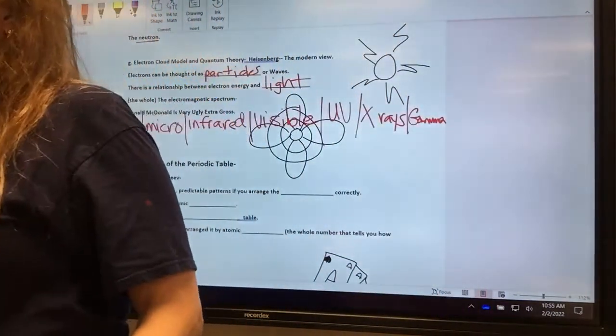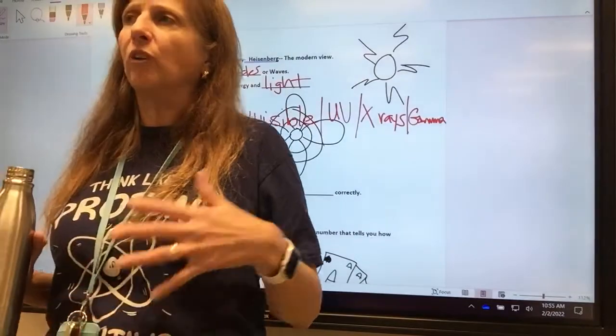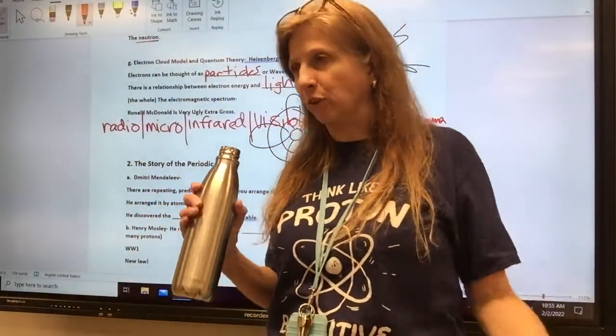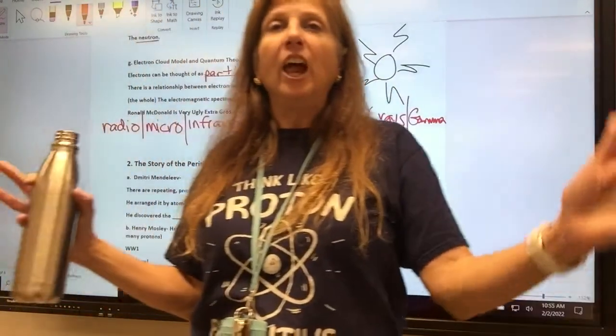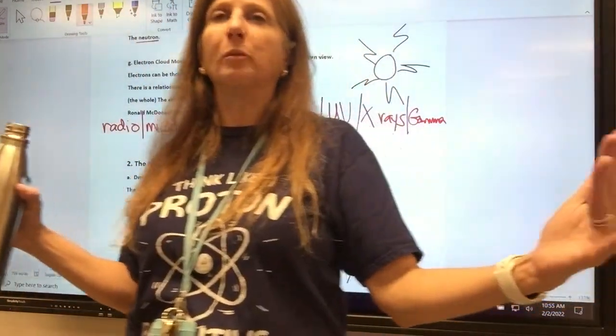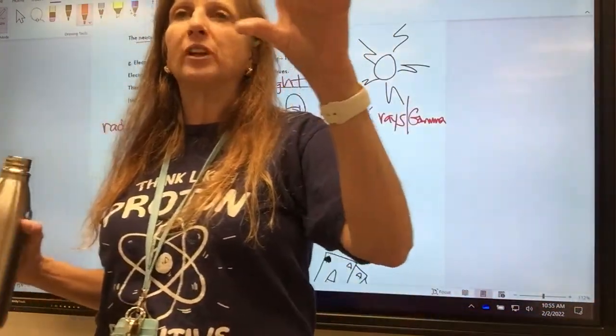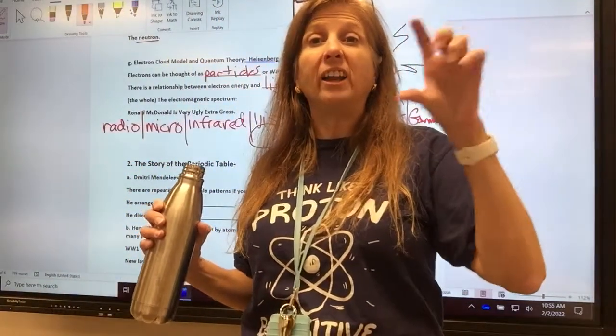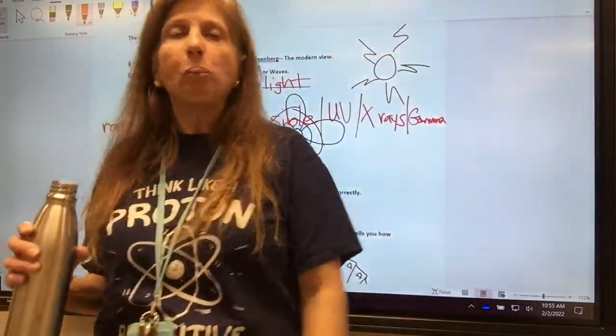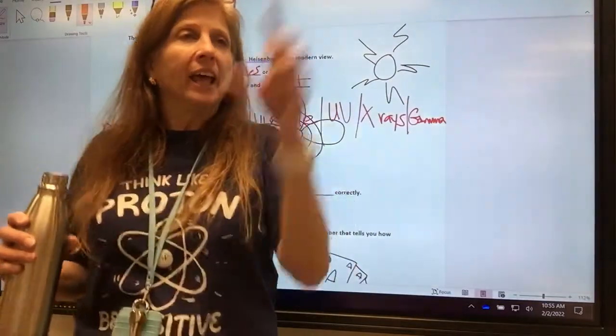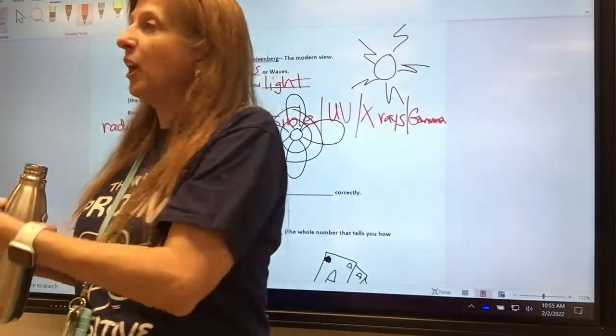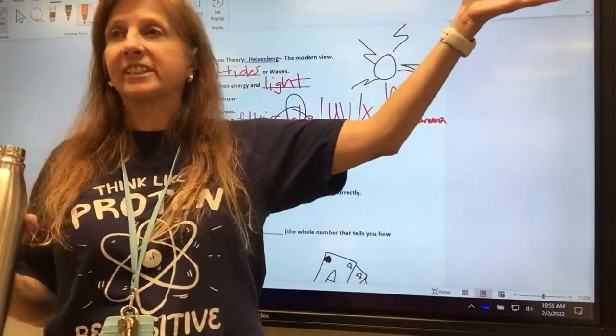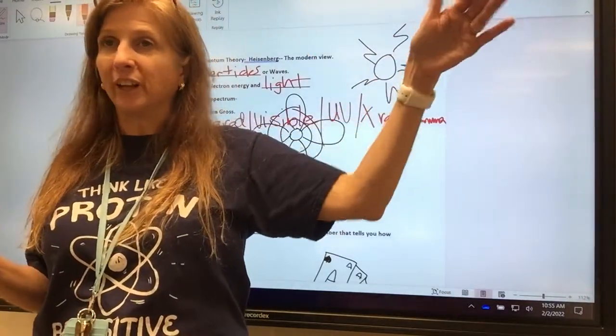He discovered it. There is a pattern in the elements that is found in the periodic table. He did not invent the periodic table. The patterns have always been there. He discovered the periodic table. He put it in order by atomic weight and he was able to predict elements that had not even been discovered yet. They're going to discover an element. It's going to weigh this much. It's going to have these properties. And then they would discover it. And he looked psychic. So it was really cool.